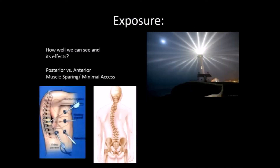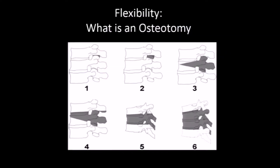Exposure is how we get to the spine. The most common way is through the back — the posterior aspect. Other options include coming through the front. Each approach has its advantages and disadvantages. We've moved a lot away from coming in anteriorly, even though it's a good tool for certain situations, because of a number of associated problems. So for most patients, we tend to come in posteriorly.